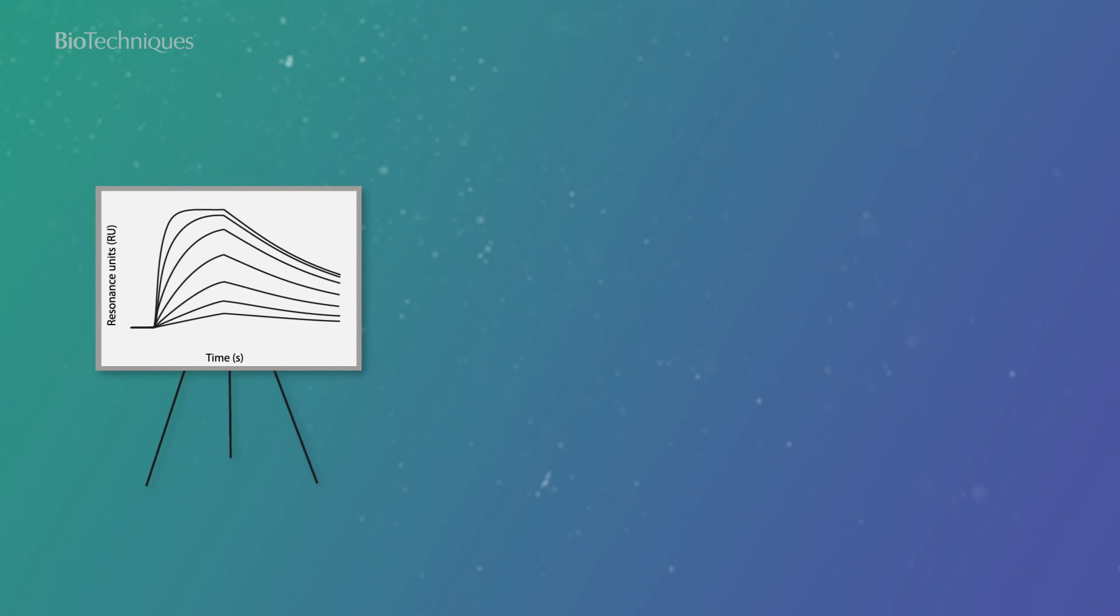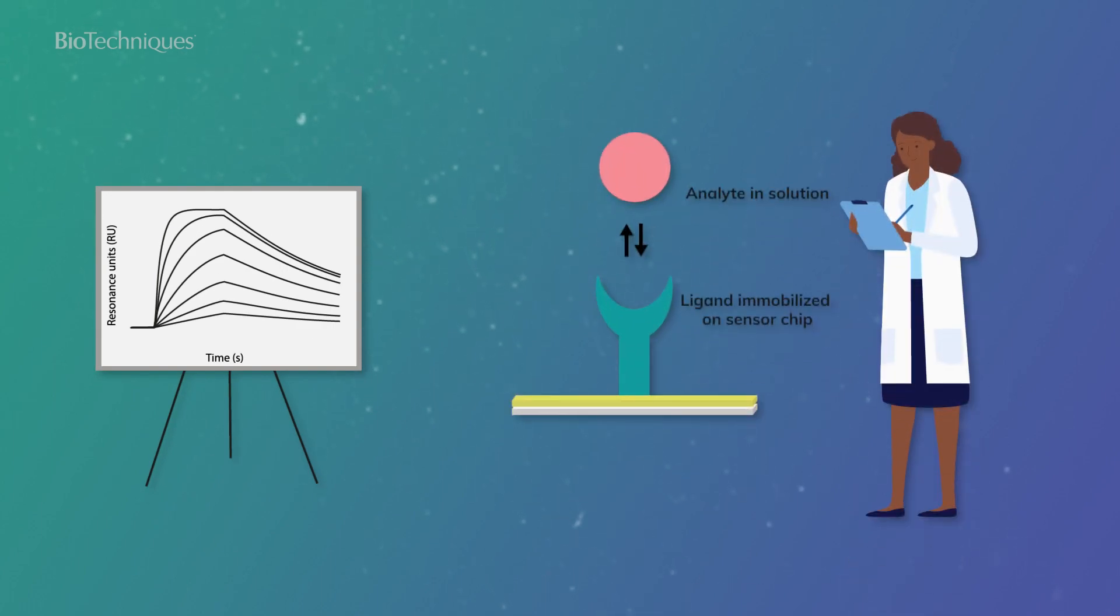With data collected from SPR assays, researchers can determine the kinetic rate constants and binding affinity of a given analyte to a target ligand.